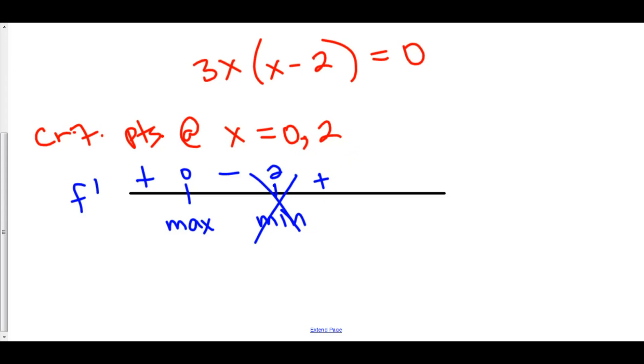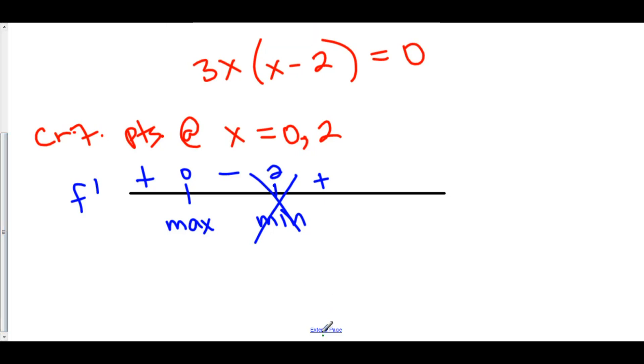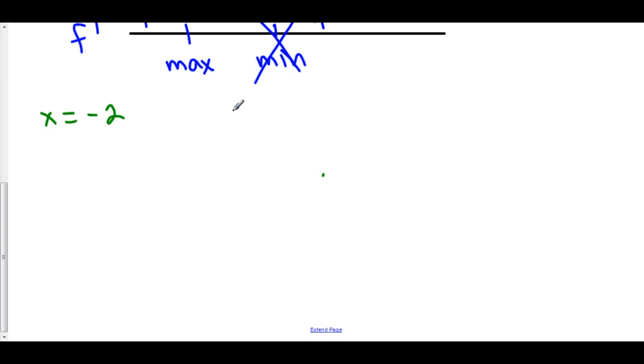So we're going to check x = 0, but we're also going to check the 2 endpoints because we need to know what those are going to be as well. So there are 3 things that we have to check: x = -2, x = 0, and x = 4.